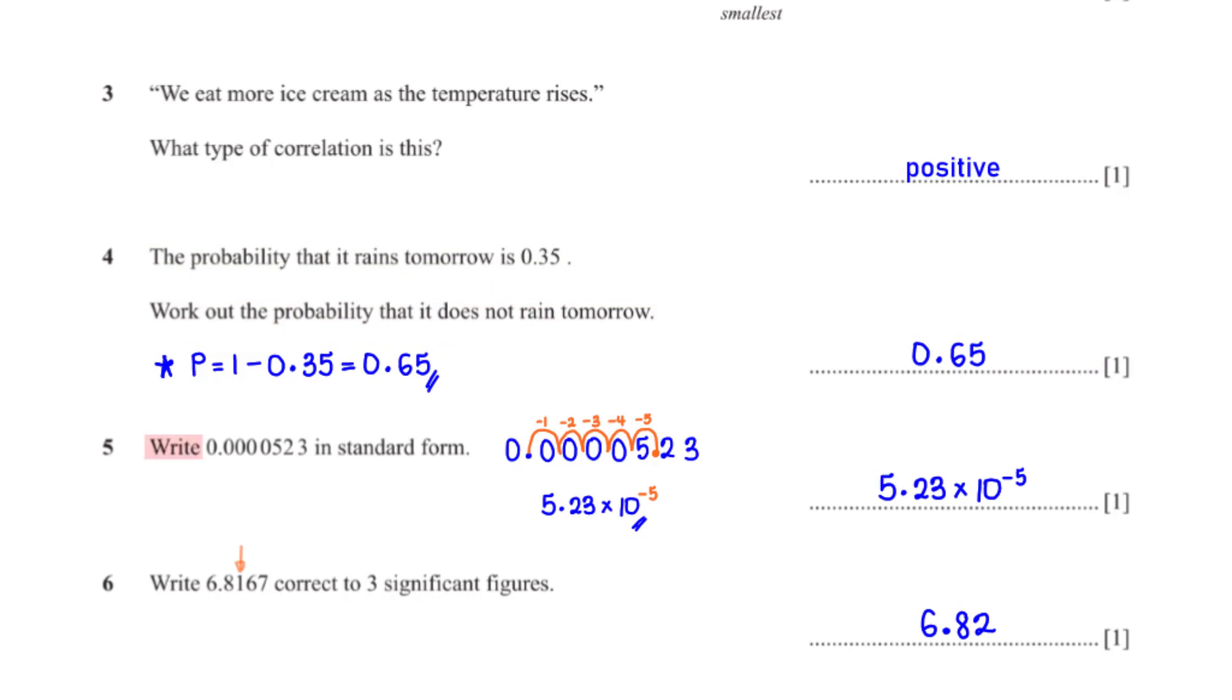Write 0.0000523 in standard form. To write this number in standard form, we move the decimal point to a position after the first non-zero digit, which is 5. Since we move the decimal point 5 units to the right, we multiply 5.23 by 10 raised to the power negative 5.